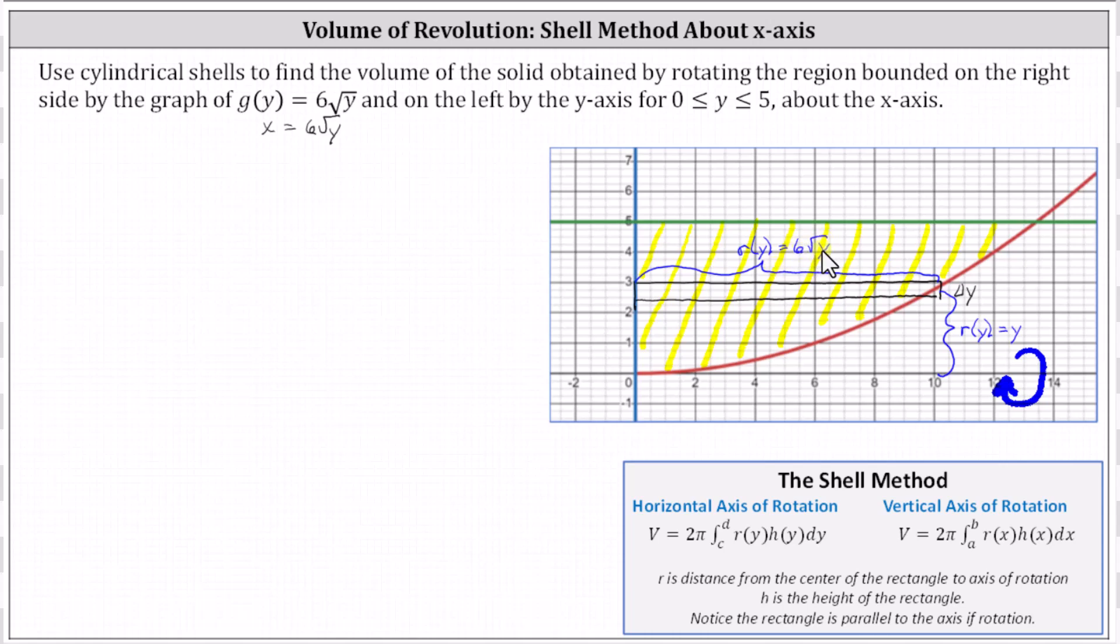And again, we're integrating with respect to y, and therefore the limits of integration will be from zero to five along the y-axis. This indicates the volume V equals 2π times the integral from zero to five of r(y), which is y, times h(y), which is 6√y, dy.